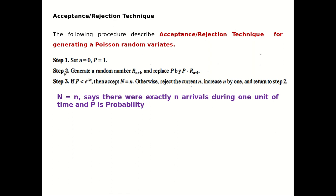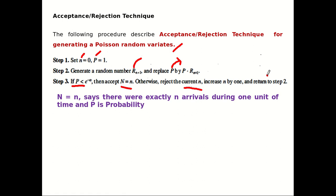Now let us see the acceptance and rejection technique for generating Poisson random variates. Here we consider the Poisson distribution. The first step is set n equal to 0 and p equal to 1, where n is the exact number of arrivals during one unit of time and p is the probability of arrival. Step 2: generate random number r(n+1) and replace the probability by multiplying p by that random number. In step 3, check if p is less than e raised to minus alpha; then accept n. Otherwise, reset, increment n by 1, and return to step 2.